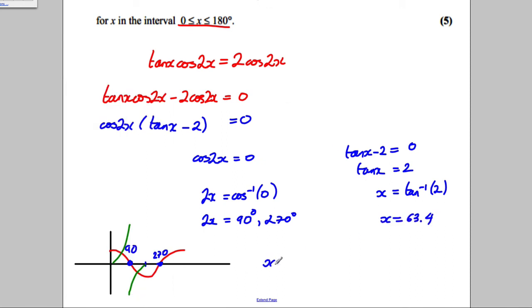So, all our answers combined are x is equal to the following. X is equal to, here we would have 45 and 135. And here we have the 63.4. So, 45 degrees, 63.4 degrees, and 135 degrees.